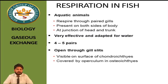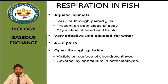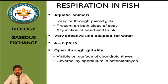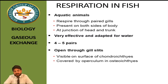Fish is an aquatic animal. The respiratory surface — the gills — are present in pairs on both sides of the body, the right side as well as the left side. The number of pairs varies; normally 4 to 5 pairs are available. These gills are present at the junction of the head and trunk.